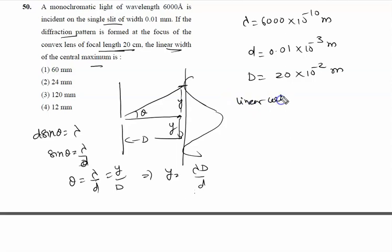So linear width 2y is written as 2 lambda D by d. So it is 2 lambda is 6000 into 10 to the power minus 10, so 6 into 10 raised to the power minus 7. Capital D is 20 into 10 to the power minus 2, so 2 into 10 raised to the power minus 1.